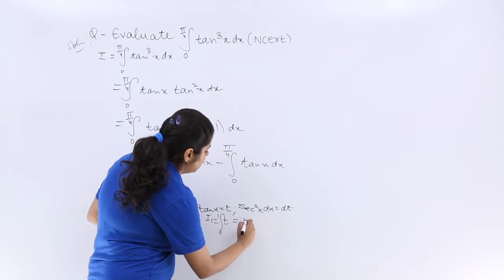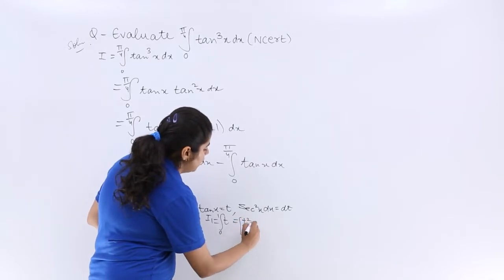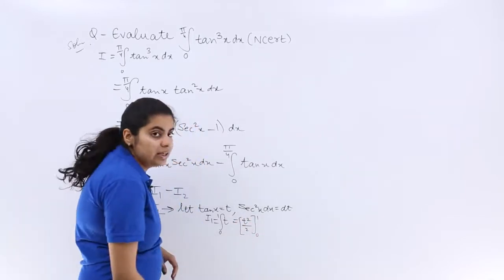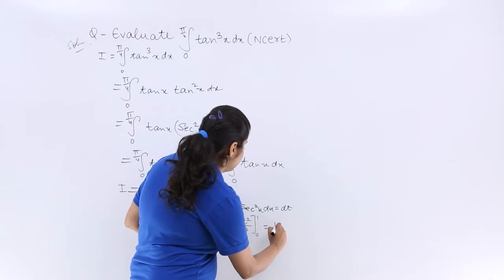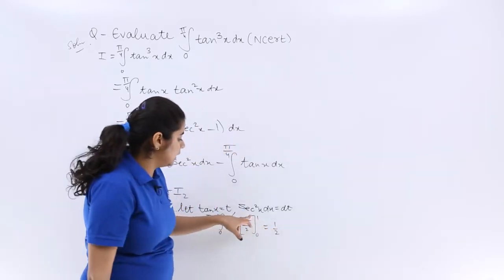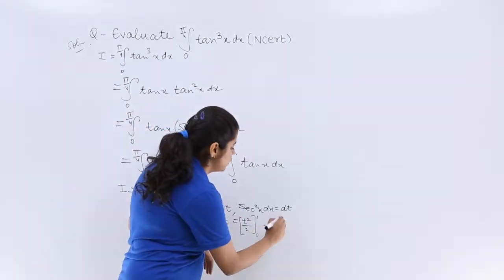So it should be [t²/2] from 0 to 1, so it is nothing but 1/2.